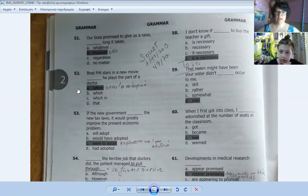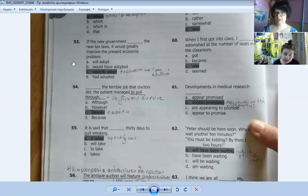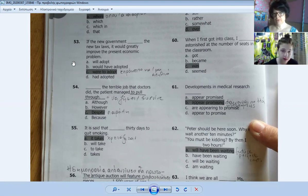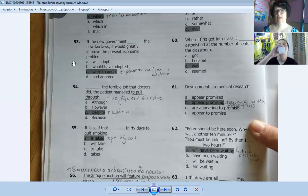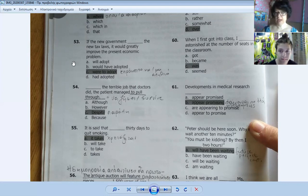Number 52: Brad Pitt stars in a new movie where he plays the part of a doctor. Number 53: if the new government were to adopt the new tax laws, it would greatly improve the economic problem. We say if the new government were to adopt - it's like if I were you in second conditional, when we don't know if something is true in the present.